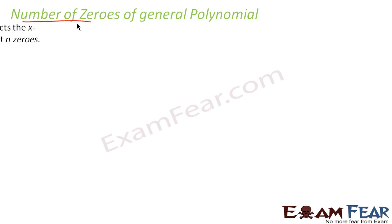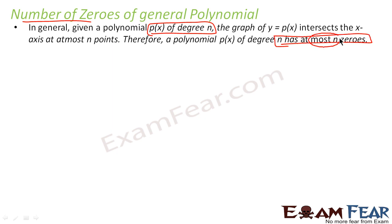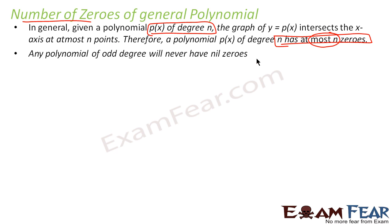Number of zeros of a general polynomial function: if a polynomial function is of degree n, then the number of zeros is at most n. Also, an odd degree polynomial function will always have at least one zero — it will never have zero zeros.